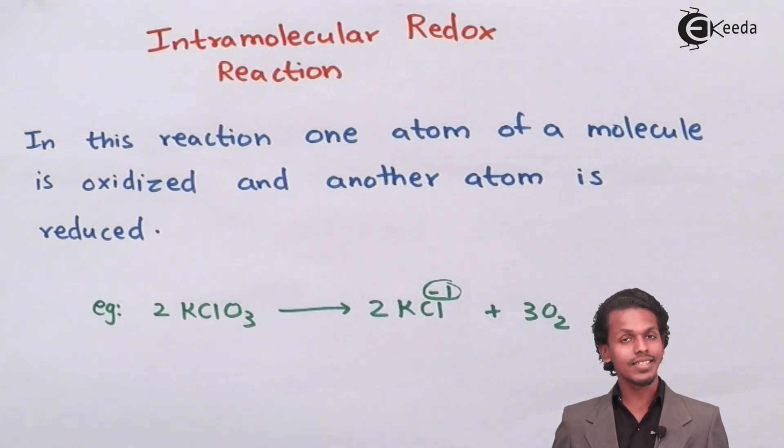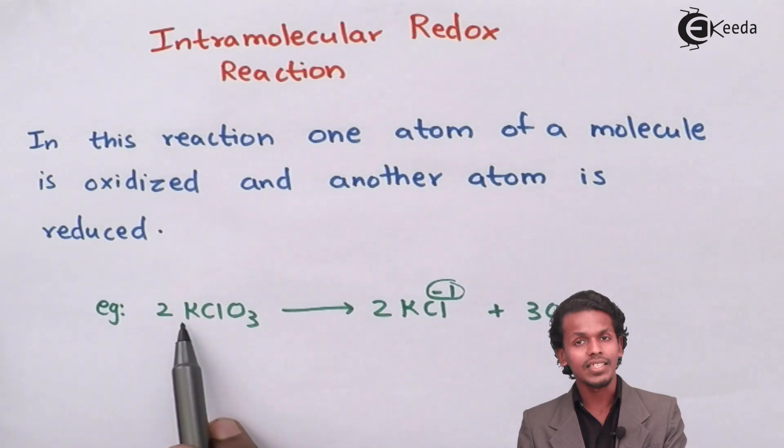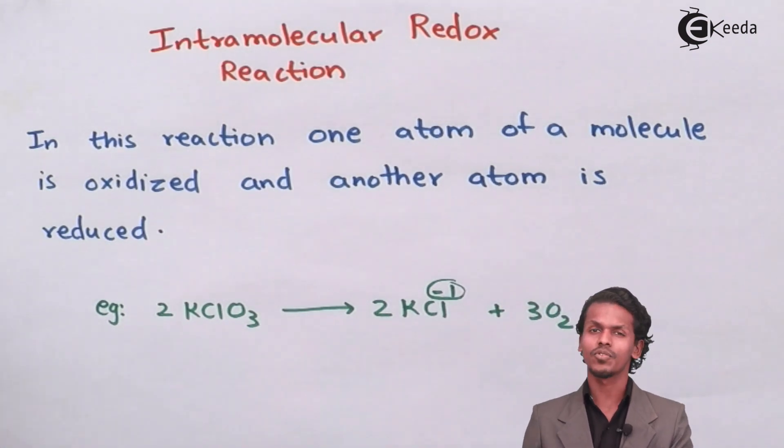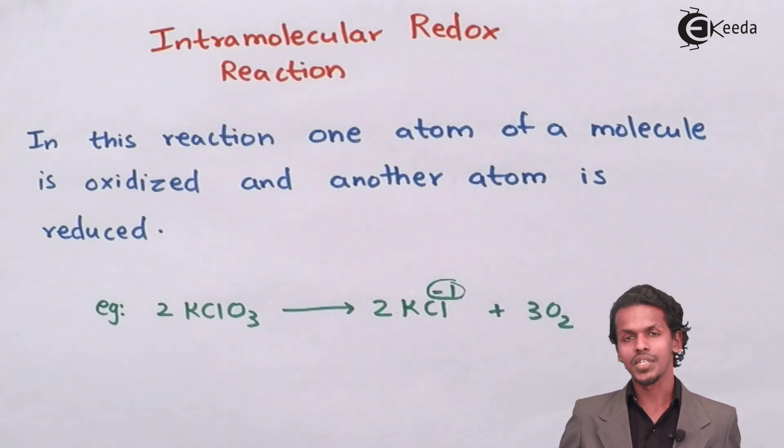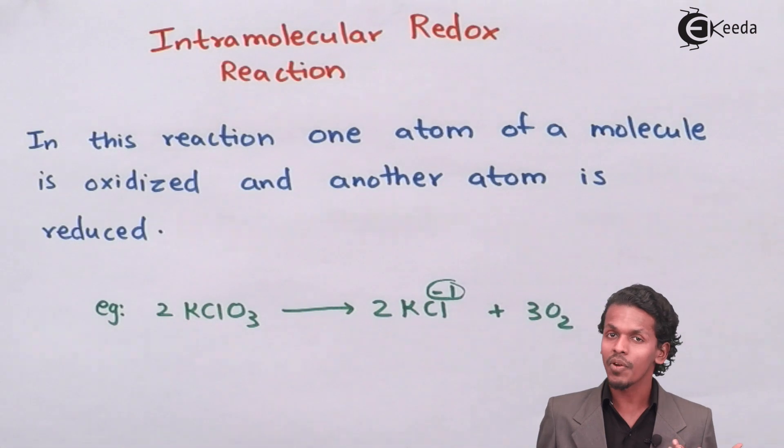If I look at this reaction, I can see that potassium has an oxidation number of plus one which is being converted into plus one itself. So there is no change in oxidation number of potassium, therefore we are not going to compare the oxidation number of potassium.